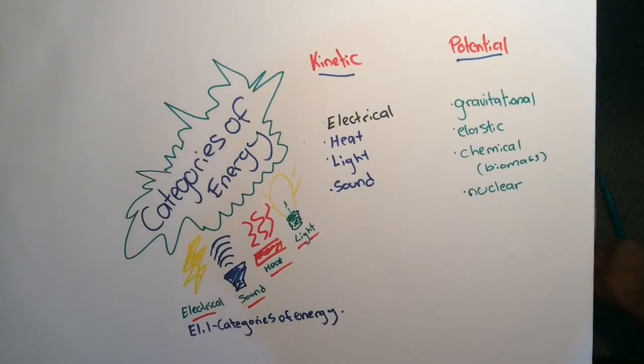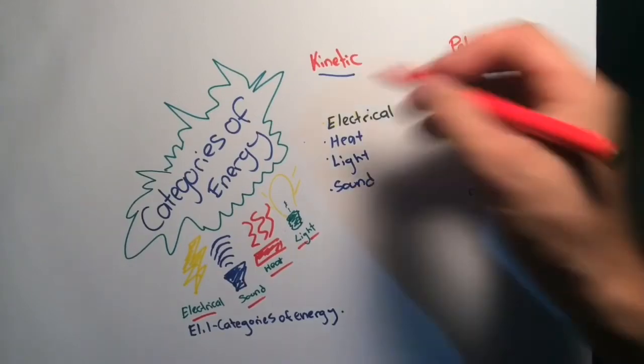There are two main categories in which energy can be organized. The first is kinetic and the second is potential. We're going to explore both of these in more detail in a later episode, but briefly, kinetic energy refers to forms of energy that are in motion.